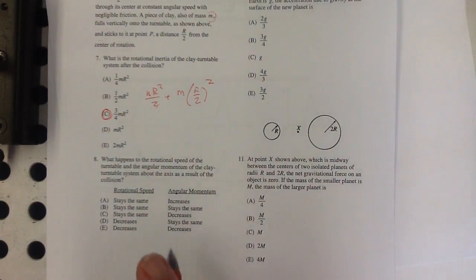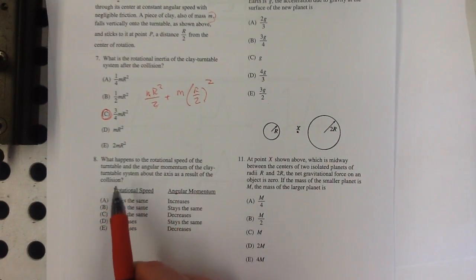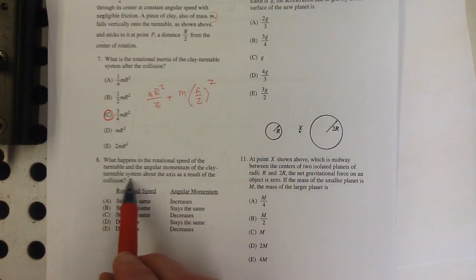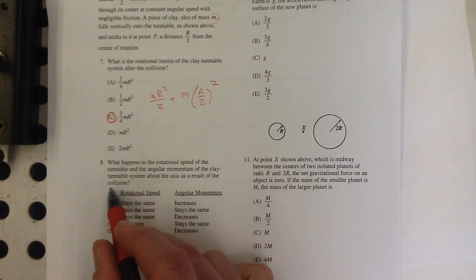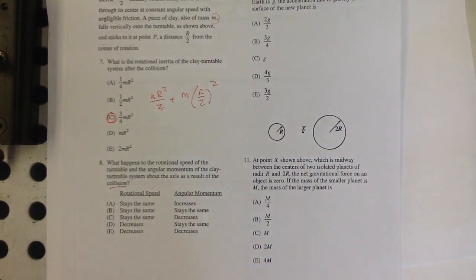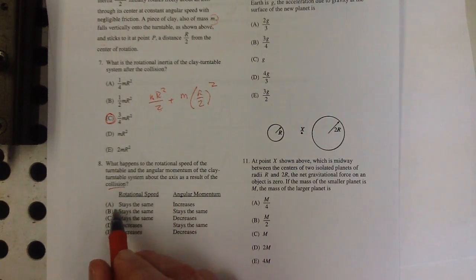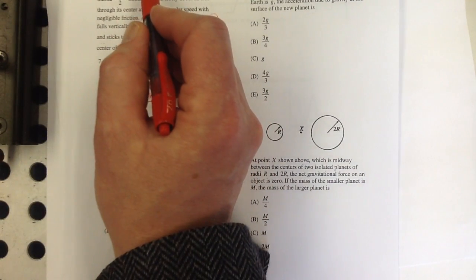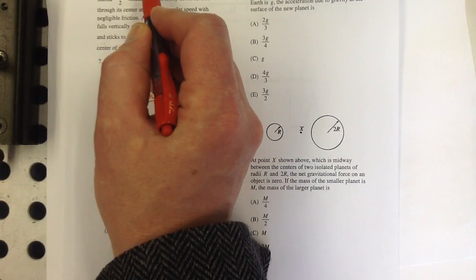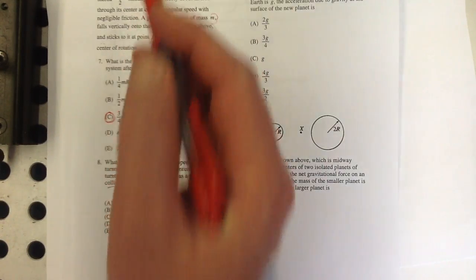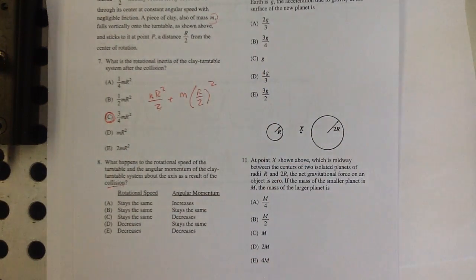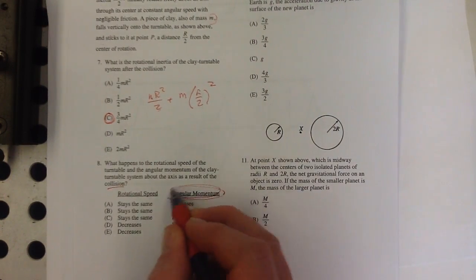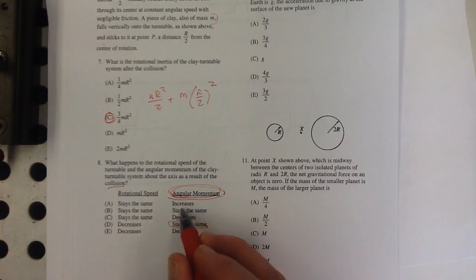Now, what happens to the rotational speed of the turntable and the angular momentum of the clay turntable about the axis as a result of the collision? So what happens to the rotational speed? When you plunk this thing on there, the rotational speed is going to decrease. Right? The thing that's conserved in a collision is momentum. So in this collision, the angular momentum stays the same.